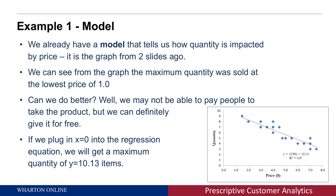The question is: can we change the price even more to do better? Can we use some sort of recommendation to the company to increase the quantity sold? The answer is actually yes. We can set the price to zero — give the product for free. In this case, we're extending the regression line to the left-hand side. Using the regression equation, if we plug in x equals zero, meaning the price equals zero, we get a y value of 10.13, which is the maximum quantity we can sell.